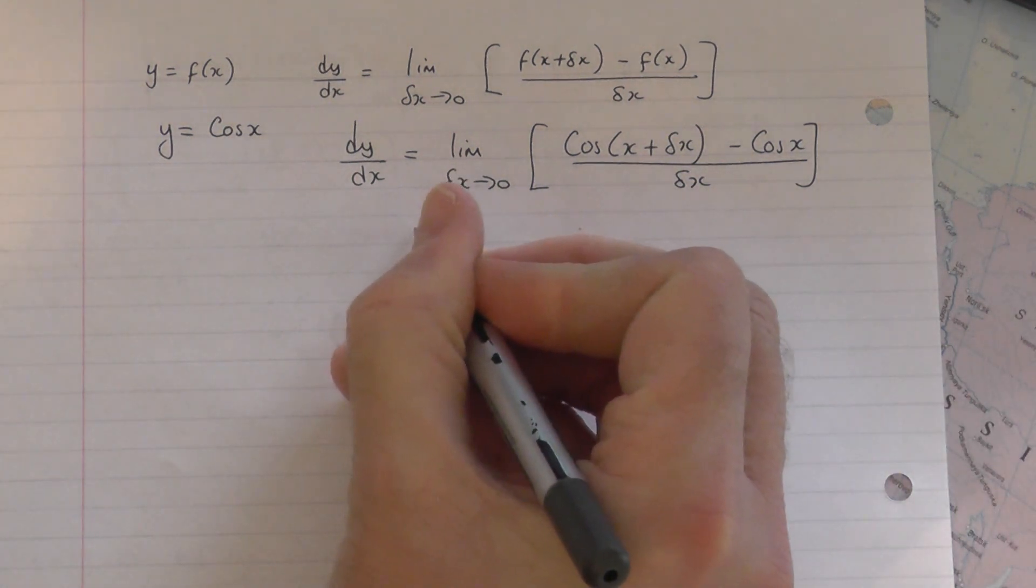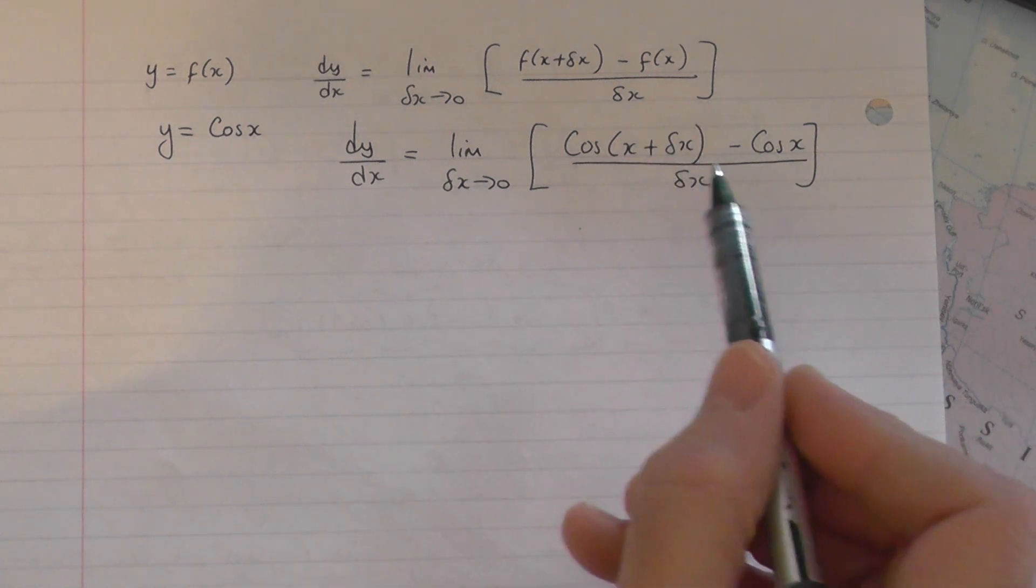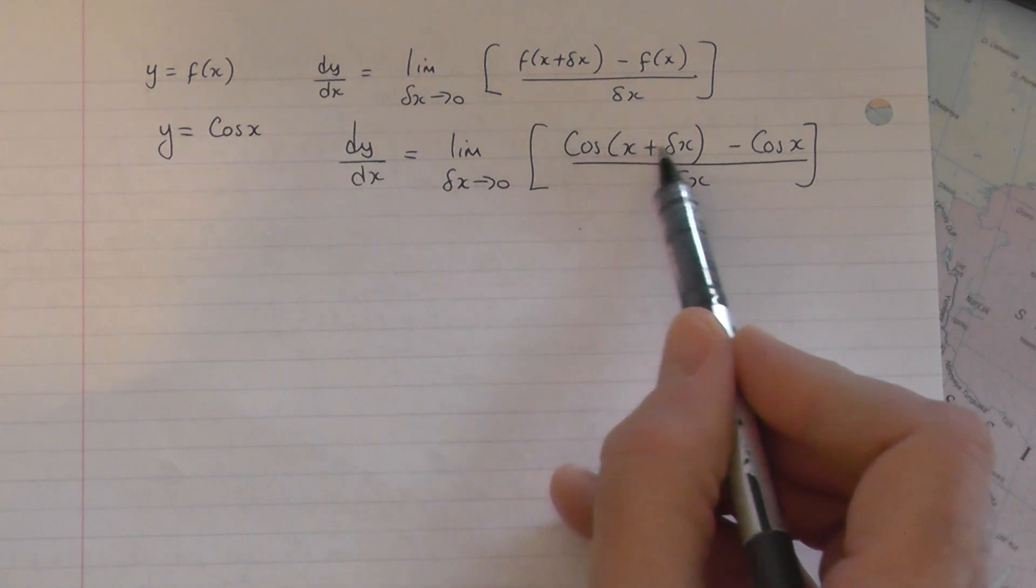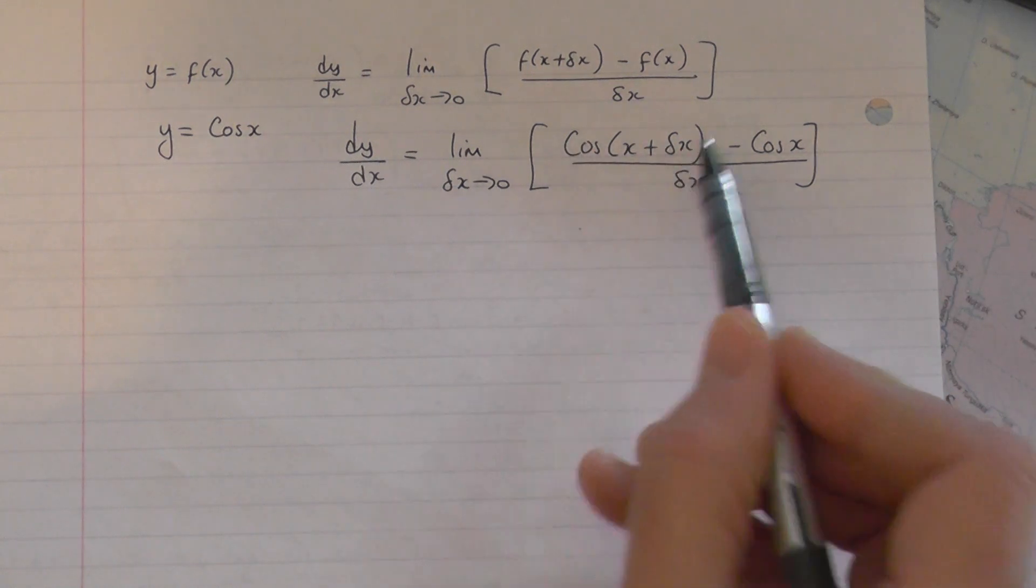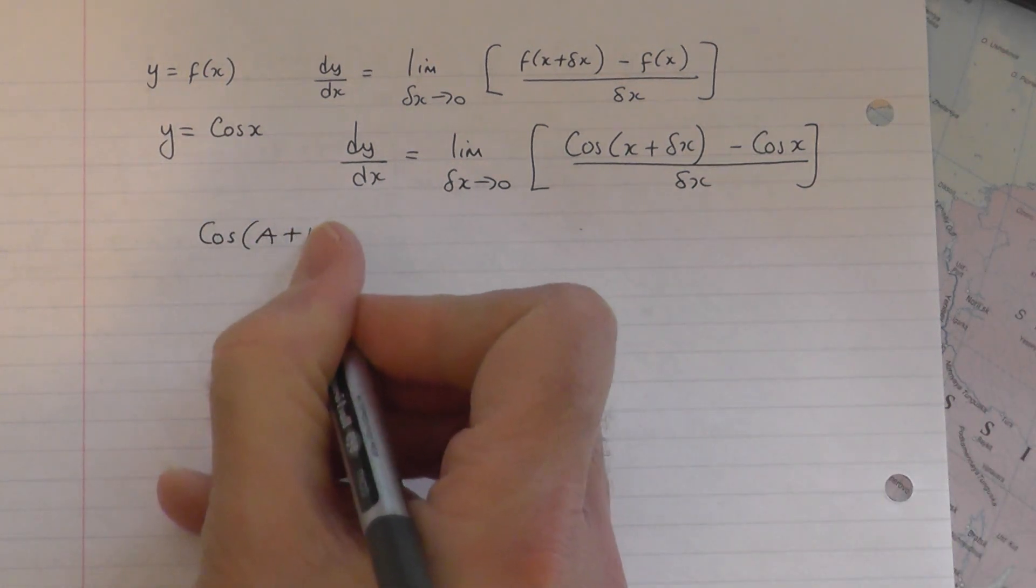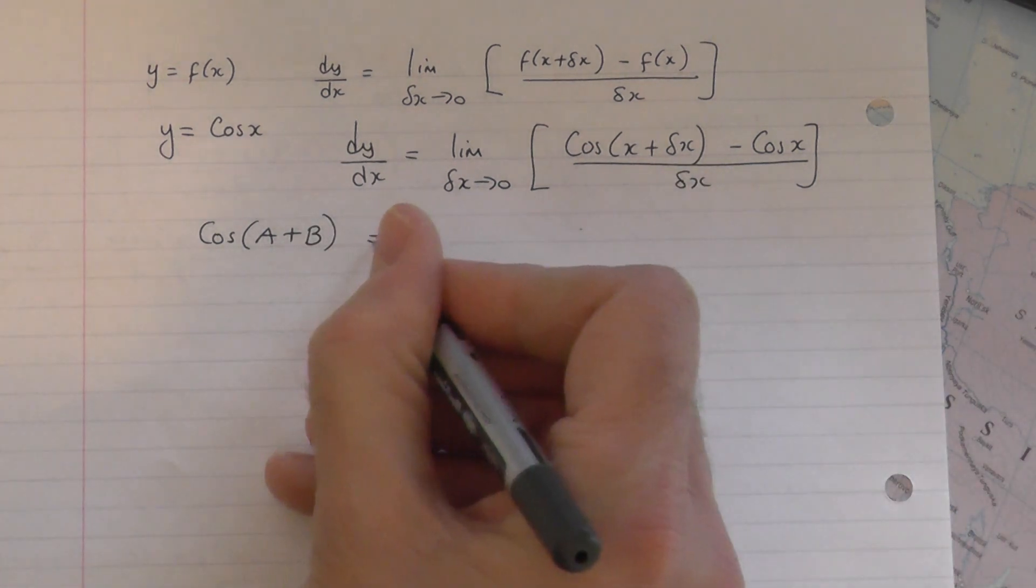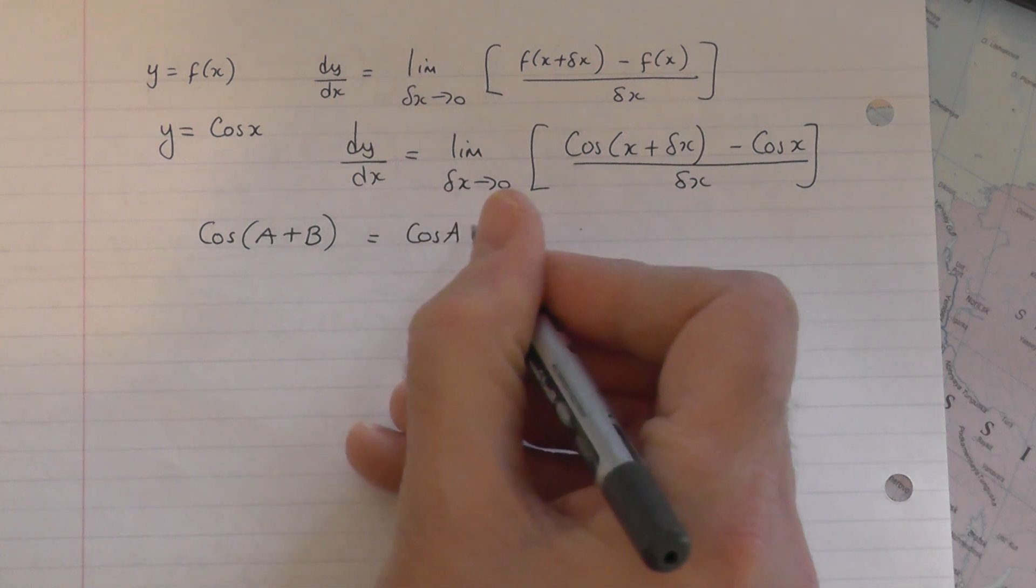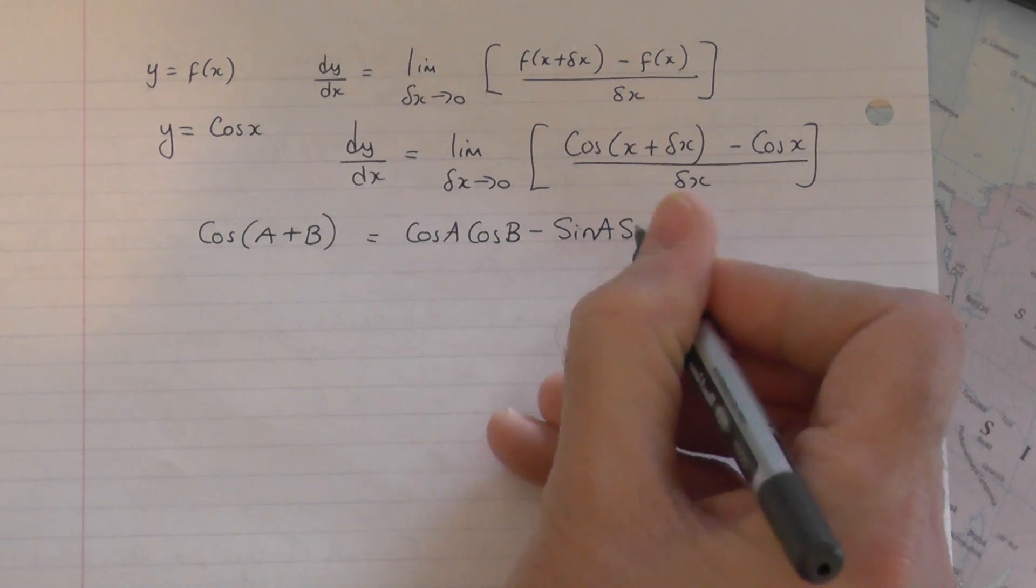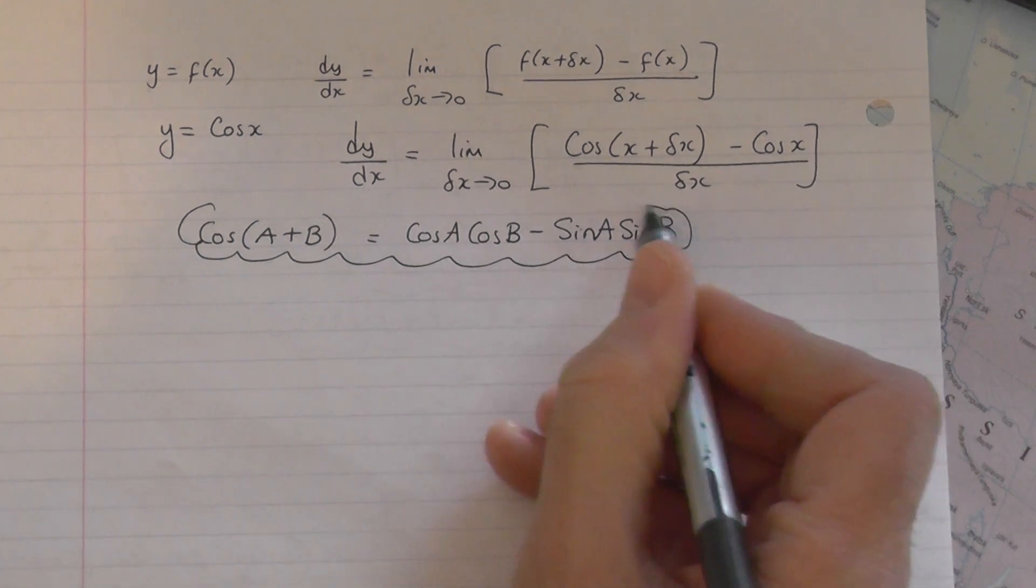So what I'm going to do now is what I did in the previous video where we differentiated sine x. I'm going to apply a compound angle expression identity to this first term here. So you should know from your trigonometry that the cos of a plus b, x plus delta x here, but it's a plus b generally, will be cos of a cos of b minus the sine of a times the sine of b. And that's something you should know and be able to apply in this particular proof.